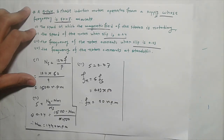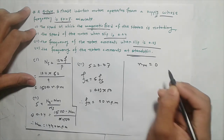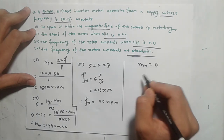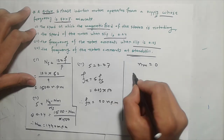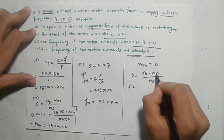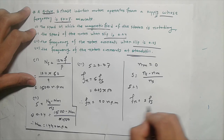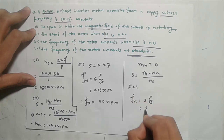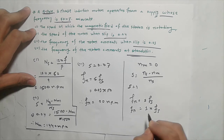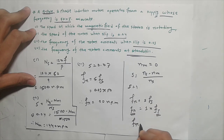The last part asks for the frequency of the rotor currents at standstill. At standstill, Nm equals 0, so slip equals (Ns - 0) / Ns, which equals 1. Therefore, rotor frequency Fr equals 1 times Fs, meaning the rotor frequency equals the supply frequency of 50 Hz at standstill.